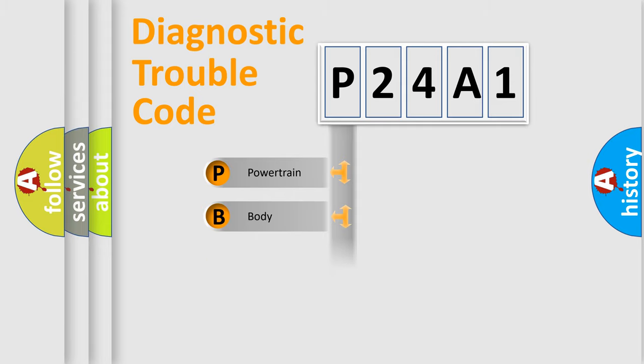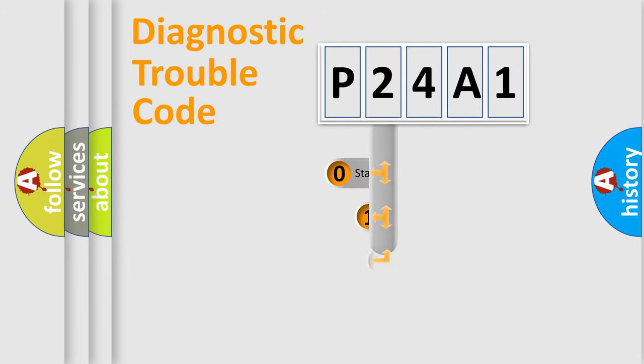Powertrain, Body, Chassis, and Network. This distribution is defined in the first character code.